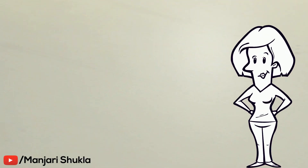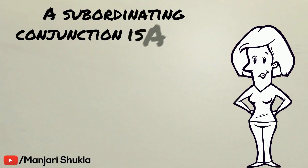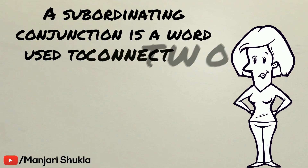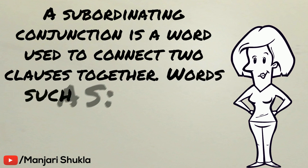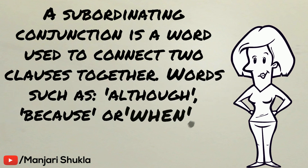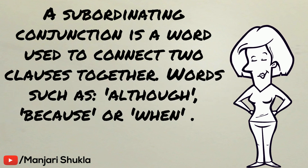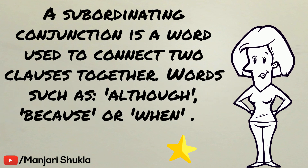A subordinating conjunction is a word used to connect two clauses together — more specifically, an independent and a dependent clause together. Words such as 'although', 'because', or 'when' are commonly known as subordinating conjunctions.